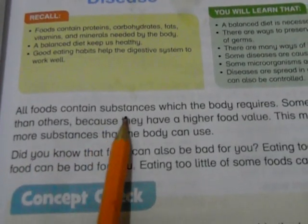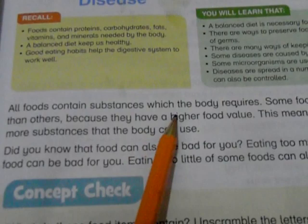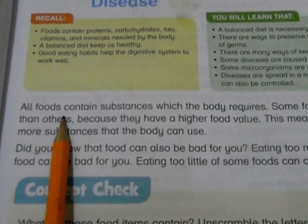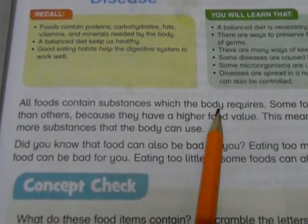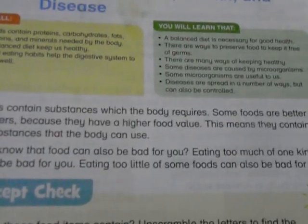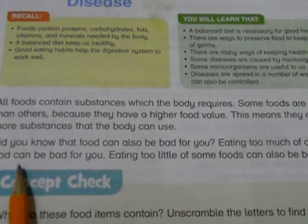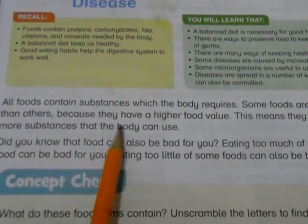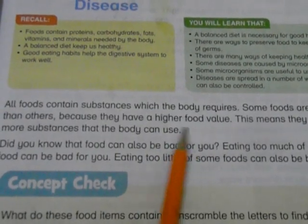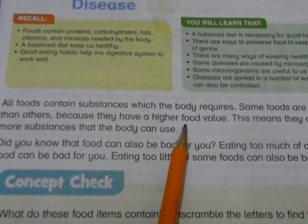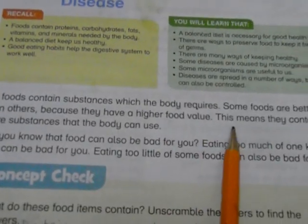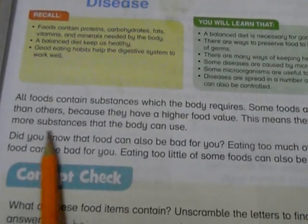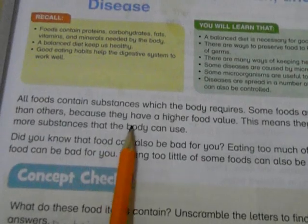All foods contain substances which the body requires. Fruit is important for the body. Some foods are better than others because they have higher food value. This means they contain more substances that the body can use.